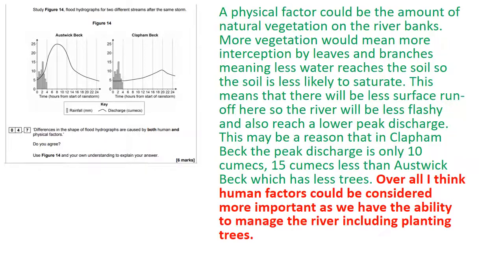For the physical argument: a physical factor could be the amount of natural vegetation on the river banks — and I've used the word natural here, not planted vegetation, which would be a human factor. More vegetation means more interception by leaves and branches. Key word: interception means less water reaches the soil, so the soil is less likely to saturate. That means there'll be less surface runoff, so the river will be less flashy and will reach a lower peak discharge. You can see that in Clapham Beck — approximately 14 or 15 cumecs lower peak discharge than Oswick Beck. Always check those graph figures carefully.